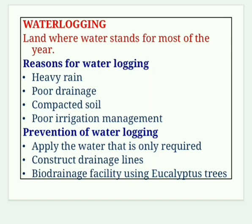Waterlogging means land where water stands for most of the year and is not absorbed — groundwater level rises close to the ground level. Pore spaces become filled with water; soil air gets depleted and roots cannot get adequate air for respiration, so mechanical strength and productivity of soil decrease. Causes of waterlogging include heavy rain, poor drainage, compacted soil and poor irrigation management. Prevention: apply only the required amount of water, construct drainage drains, and plant deep-rooting plants like eucalyptus which have bio-drainage facility.